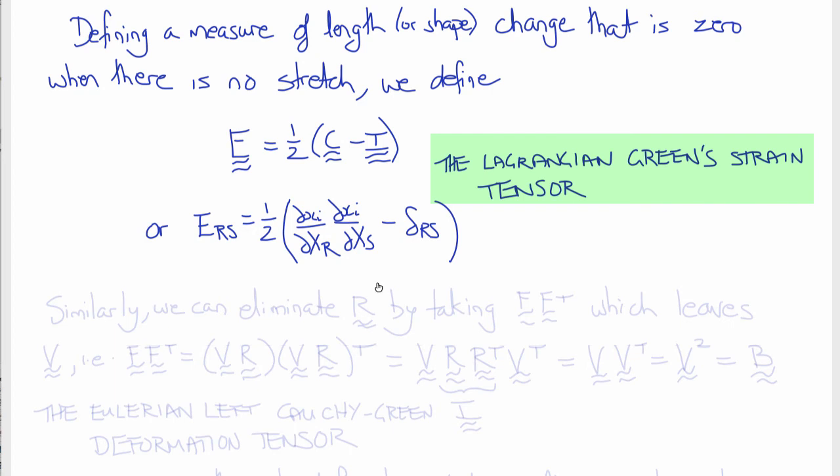Namely, length changes in multiple dimensions and two or three dimensions involve the square root of sums of squares. So in order to eliminate the rotation, we took F transpose F. That had the effect of squaring U, and therefore the strain defined this way has a quadratic definition. And the one-half there is so that when we do a Taylor series expansion and linearize, that will cancel. Similarly, we could also eliminate R from F by taking the product FF transpose instead of F transpose F.